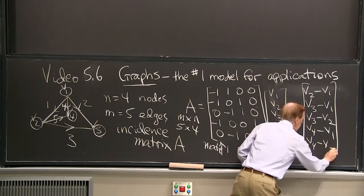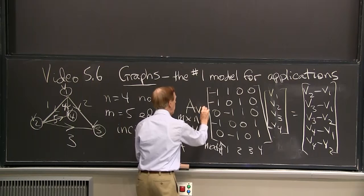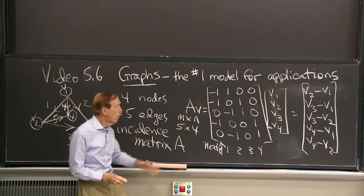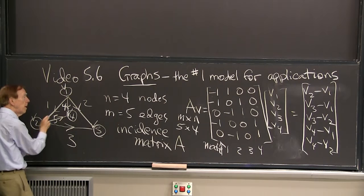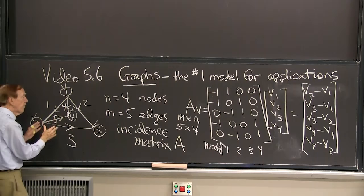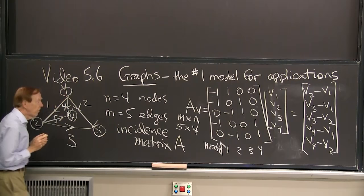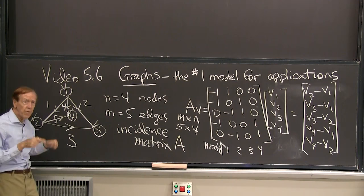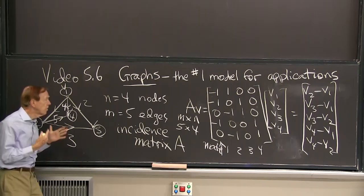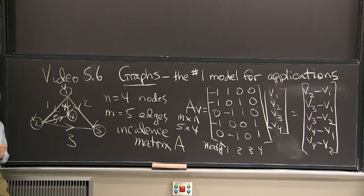So what am I seeing here? This is now A times V. I've done a multiplication by a vector of voltages. And what have I found? I've found the differences in voltages, the voltage difference between one end of the edge and the other one. I have five edges. And now I have five results. And those are the voltage differences. And what does a difference in voltage do? If these are at different voltages, different potentials, current flows. If they're at the same potential, no current flows, right? That's the fundamental driving equation of currents from voltages is the difference in the voltage, the difference in the potential drives the flow. And now how much flow?